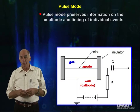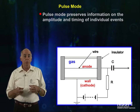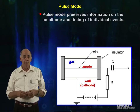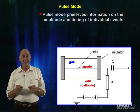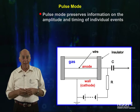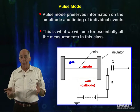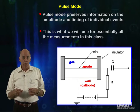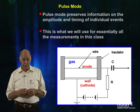For identification of nuclides, current mode is no good. We use pulse mode, the other way to monitor the signal coming from the detector. We look at the signal in detail that comes from each ionizing event in the detector. All the instruments used in this class will be operated in pulse mode because it preserves the information on the amplitude and timing of individual signals.